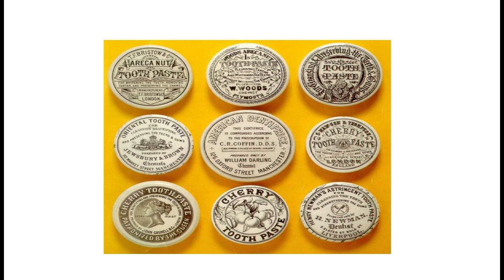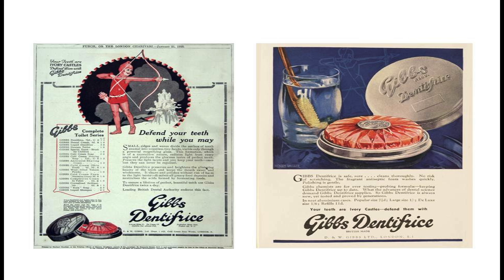Moving closer to today, early toothpaste and powders were packed in ceramic pots, often prepared by local dentists. David and William Gibbs, now Unilever, was one of the first companies in the UK to mass-produce toothpaste in the early 1900s.